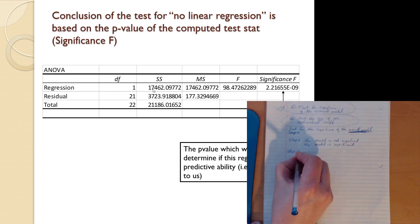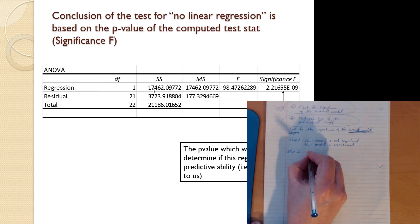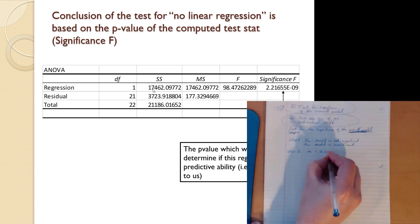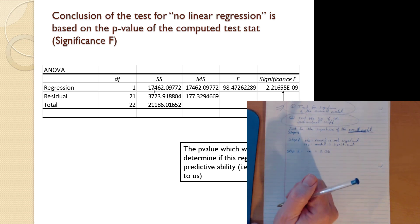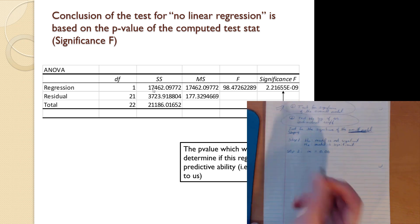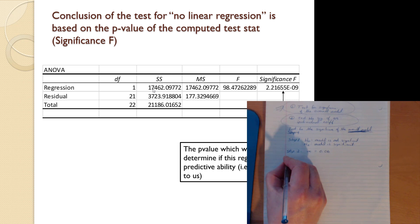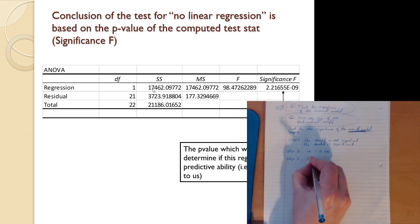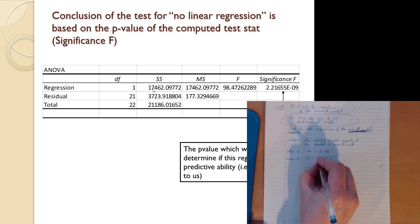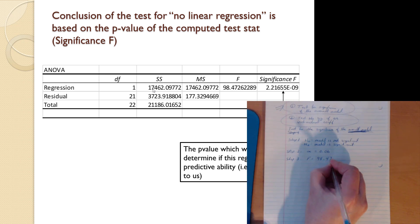Step two is alpha. We can assume any reasonable alpha — let's go with 0.06 in this case, or whatever alpha is stated in the question. There's a lot of complexity in the type 1 and type 2 error comparison. Step three — that's the F-stat. I look on my output and I see an F-stat of 98.47.